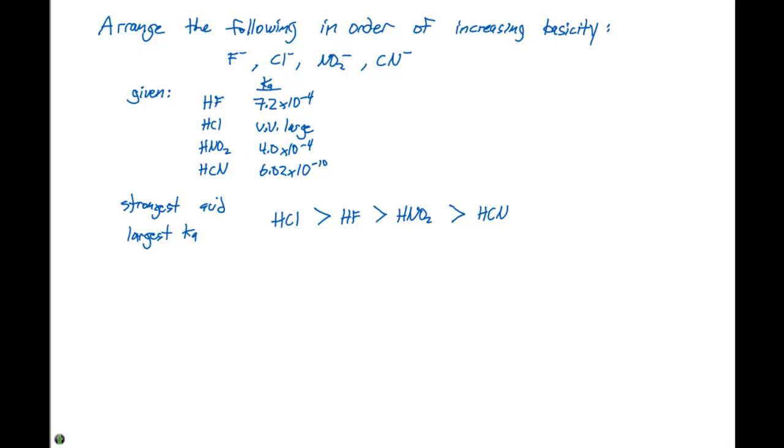The stronger the acid, the weaker the conjugate base. The conjugate base of HCl is Cl⁻, of HF is F⁻, of HNO₂ is NO₂⁻, and of HCN is CN⁻.